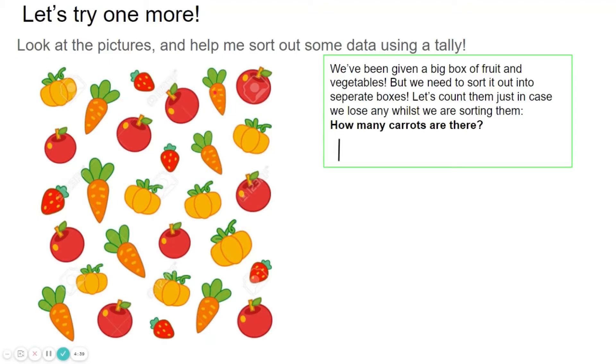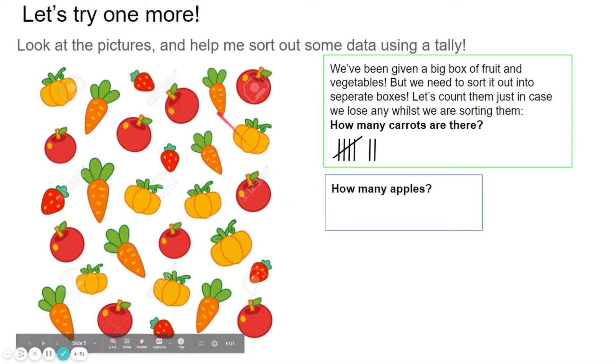Okay, so one, two, three, four, five, six, seven. Seven carrots in total. How many apples? One, two, three, four, five, six, seven, eight, nine. Nine apples.